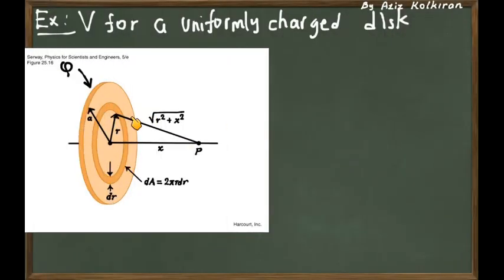We have a charged disk which has the total charge Q, and the x-axis is the symmetry axis of the disk. The question is: what is the potential of any point which lies on the x-axis at distance x from the center of the disk?